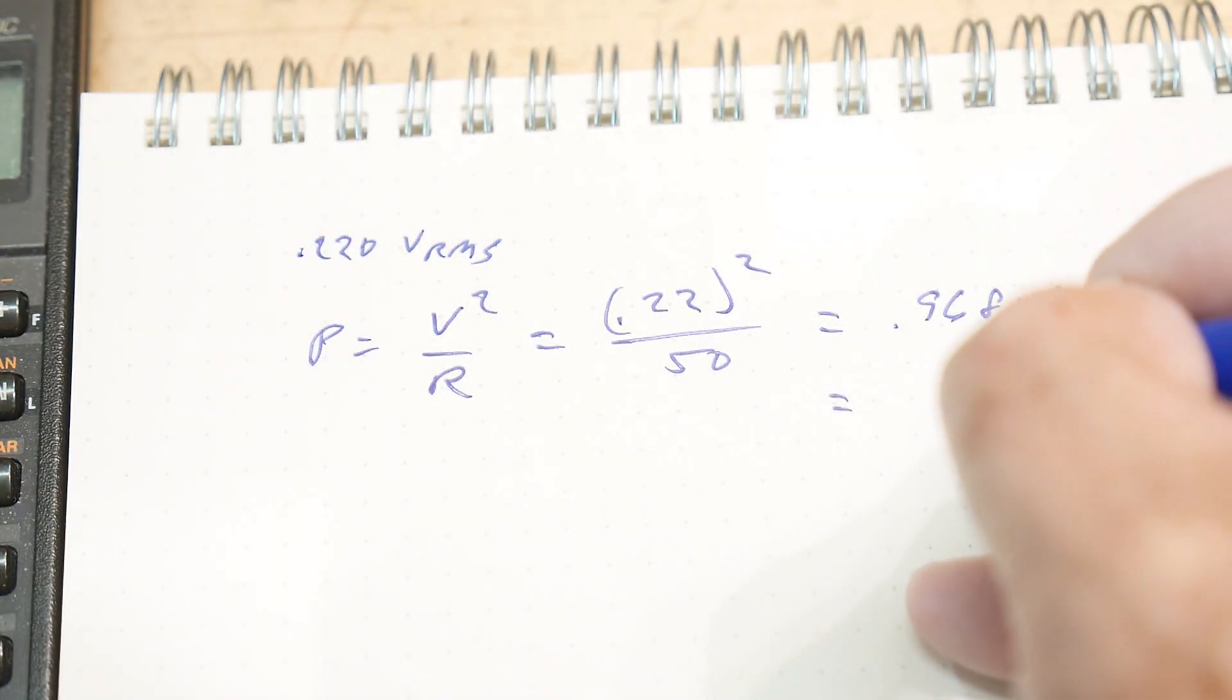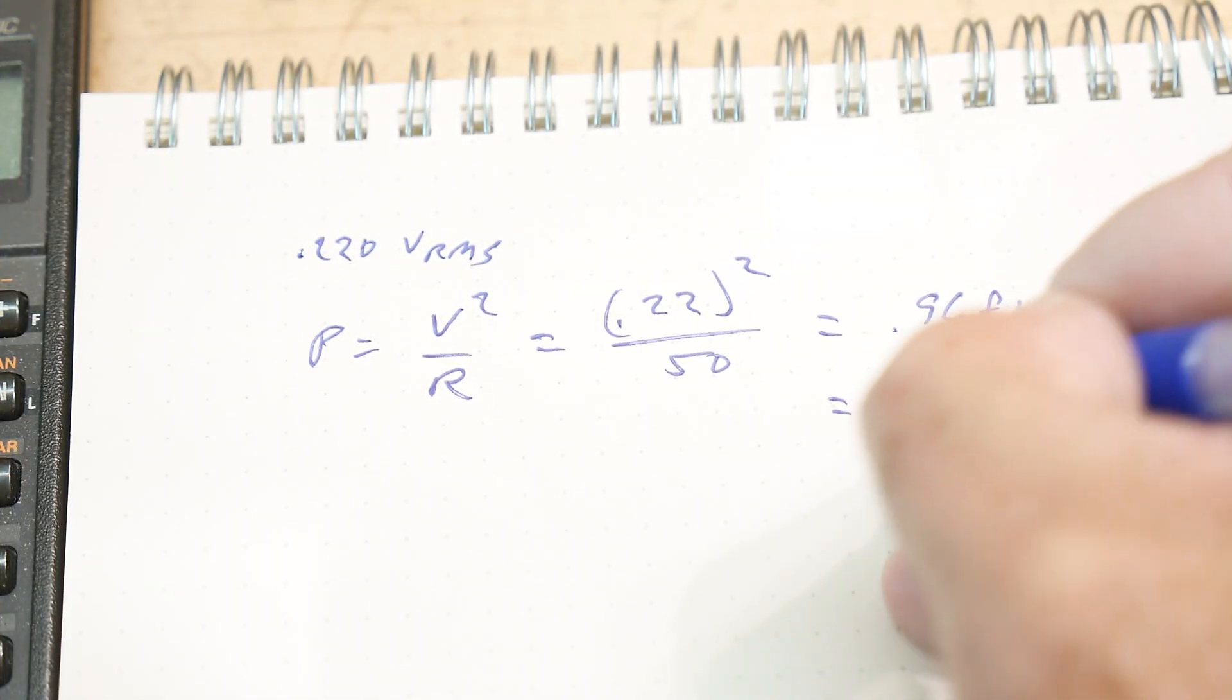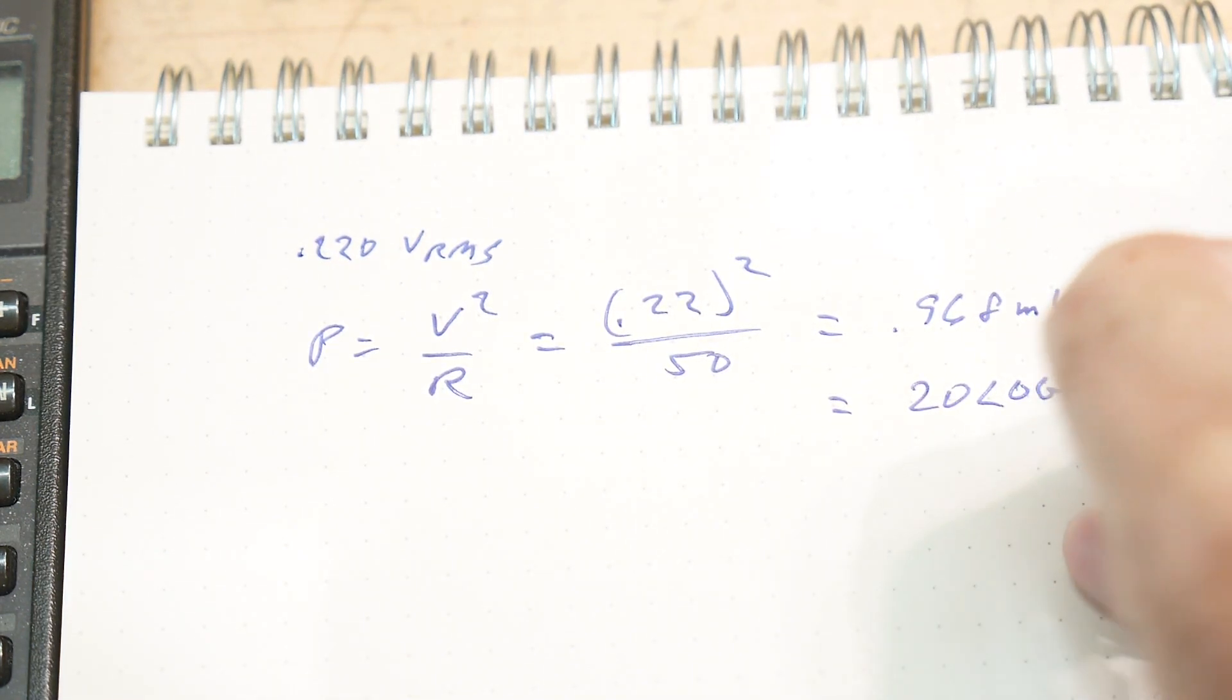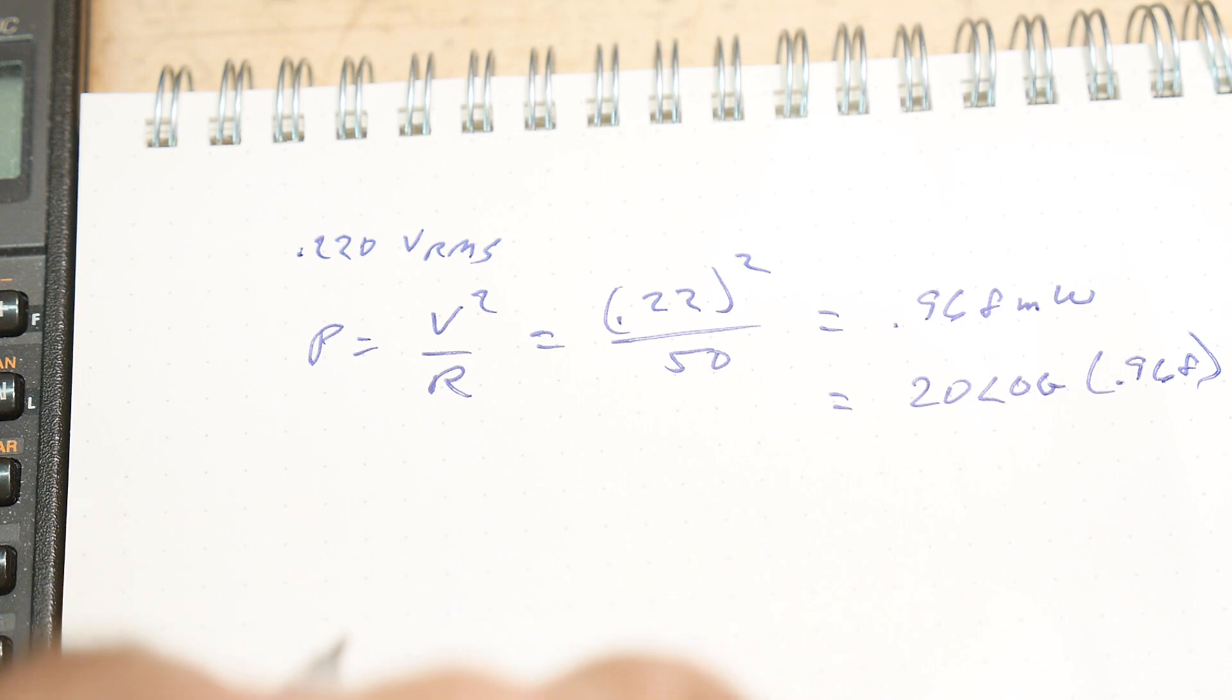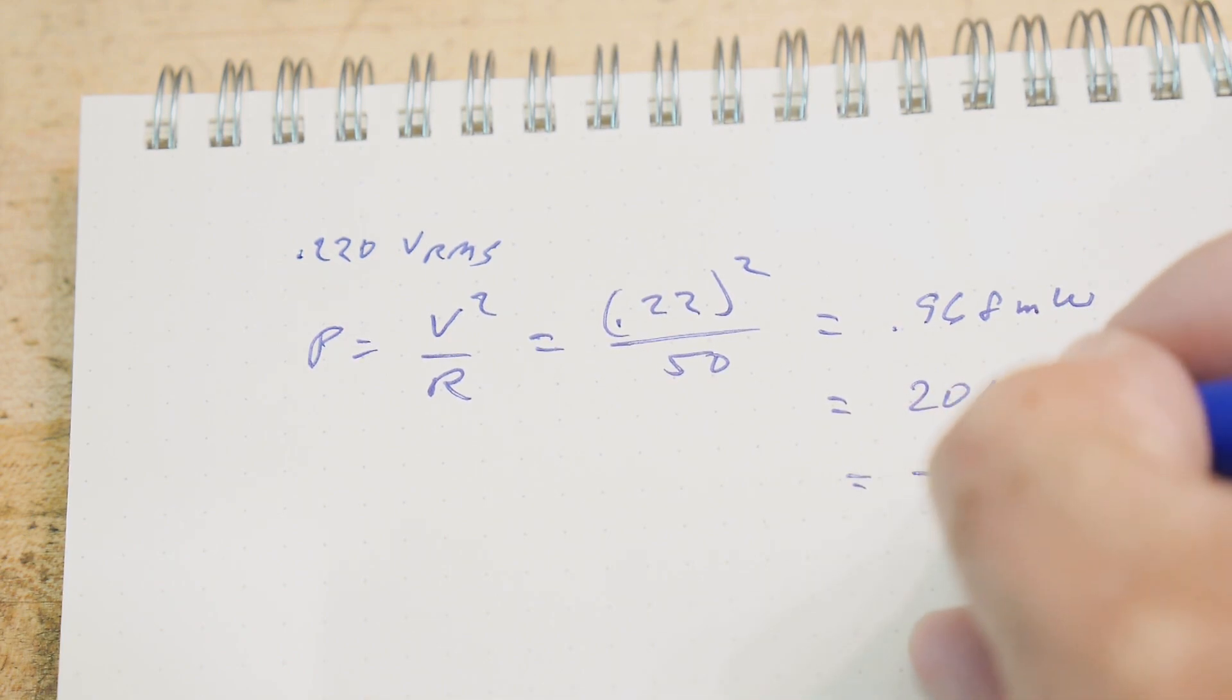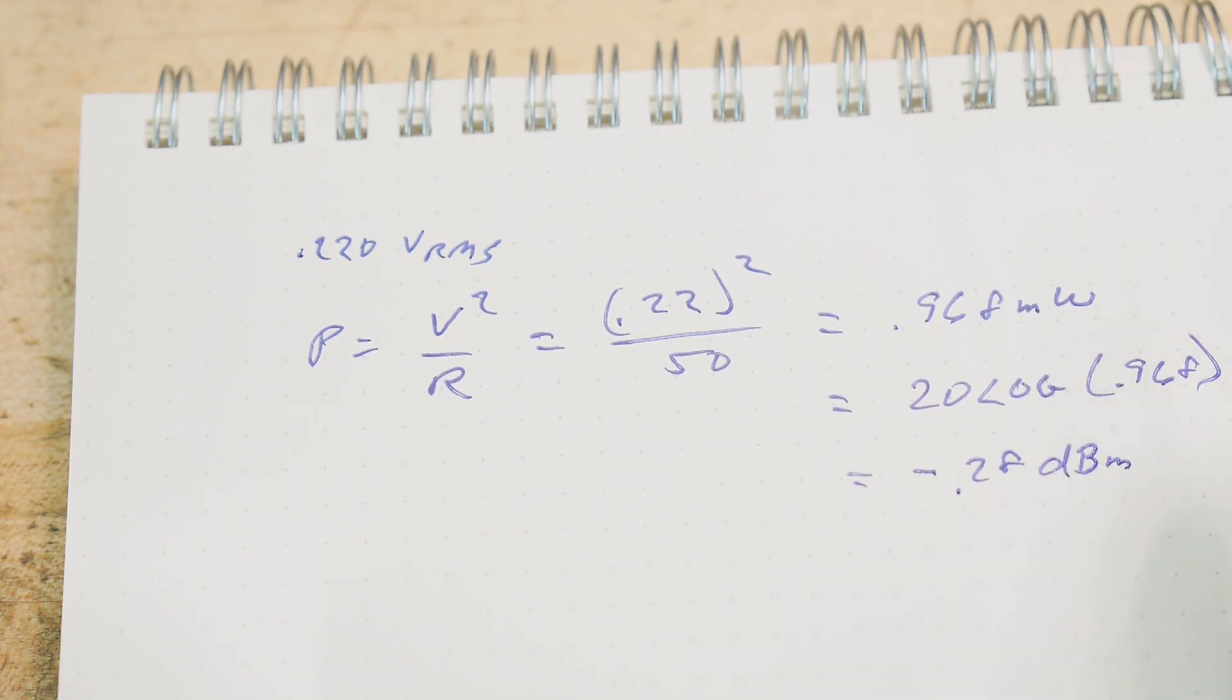Otherwise known as 20 log of 0.968 equals minus 0.28 dBm.